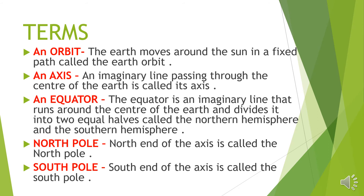The two equal halves are called the Northern Hemisphere and the Southern Hemisphere. North Pole — the north end of the axis is called the North Pole. South Pole — the south end of the axis is called the South Pole.